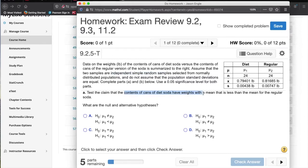Gotcha. All right, so test the claim that the contents of the diet soda have a mean that is less than the mean for this one. Okay, so μ1 and μ2—oh I see, μ1 goes with diet, μ2 goes with regular. Got it, okay.